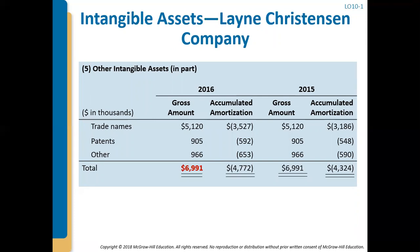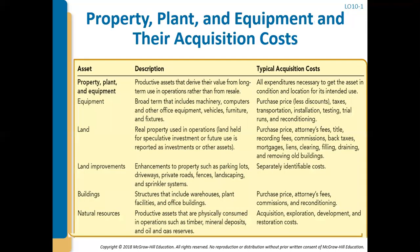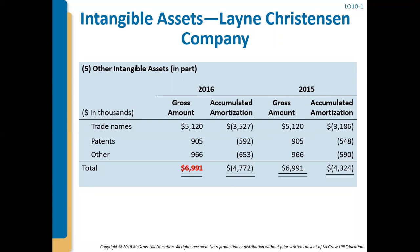For intangible assets, it's very similar. We have 2016 and 2015 amounts with amortization listed in a separate column. We start with the gross amount — likely what we originally paid — and subtract accumulated amortization. For example, $6,991 in intangible assets minus $4,772 accumulated amortization gives us the net amount reflected on the balance sheet.